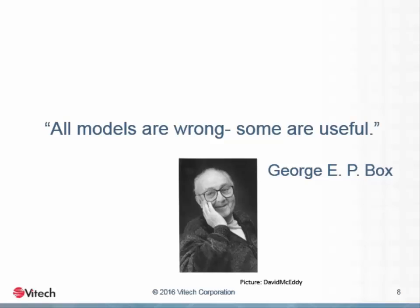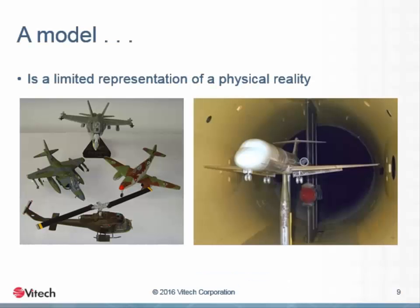The model is used to help us gain insight into the structure and properties of the system it represents — this is the measure of its utility. Models are limited representations of reality. In order to be useful, the limitations imposed must not exclude the representation of any relevant aspects of the reality being described. For example, a plastic model of a ship or plane, constructed for the purpose of representing the appearance of the real vehicle, should look like the real thing. Absolute size isn't critical and would actually be a detriment, but proportionality is. Therefore, the model is typically scaled down in size to fit on the display surface, but maintains the proportions of its various parts.